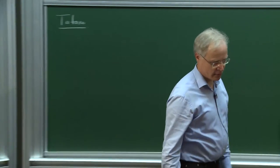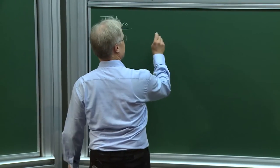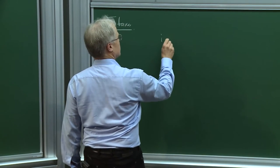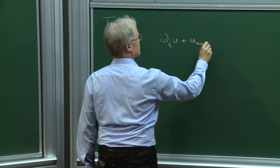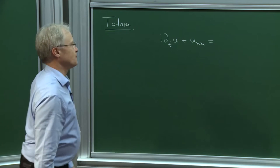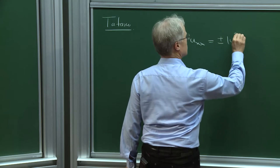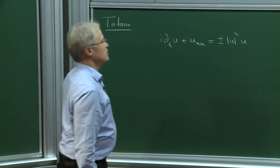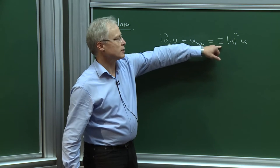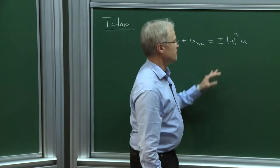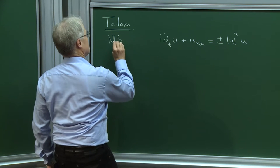Before I state exactly what we do, I want to give the equations. So there's the NLS equation: it's the one-dimensional equation i∂_t u + u_xx equals plus or minus |u|² u. In the minus case it's focusing and there are solitons; in the plus case it's defocusing and there are no solitons.